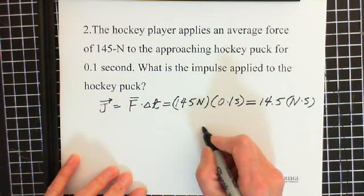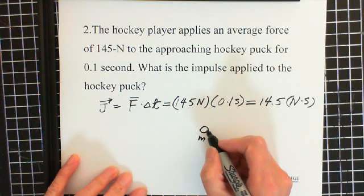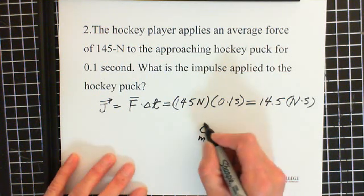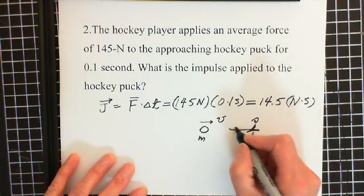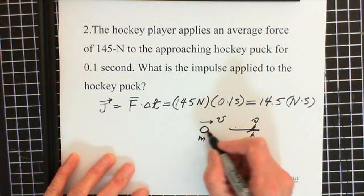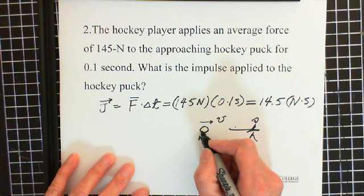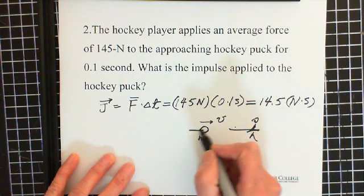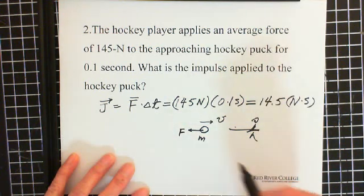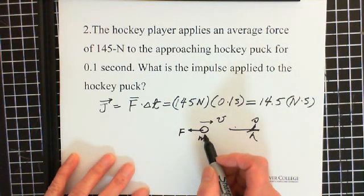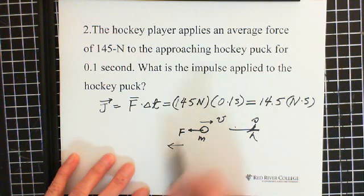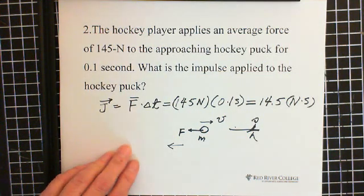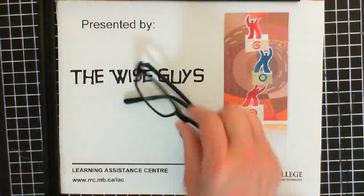From the first question, the momentum of the hockey puck was moving in one direction, and the hockey player hits the puck in that same direction, so the force is going that way. Therefore, the direction of impulse is also the direction of the average force. This has been presented by Wiseguys.